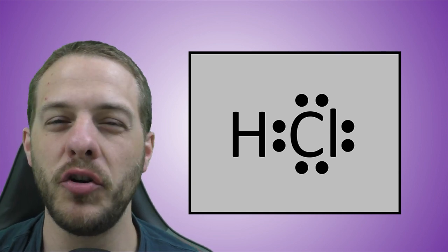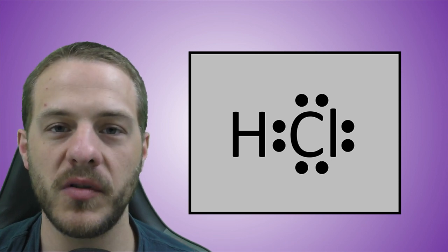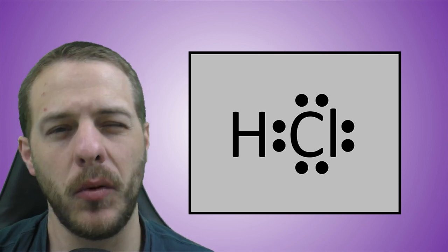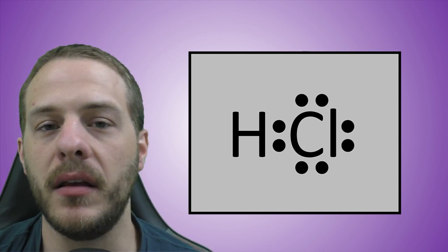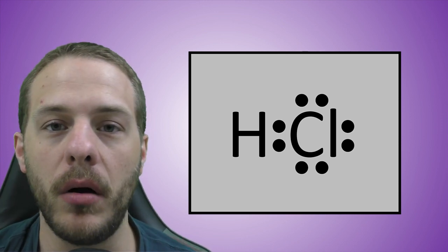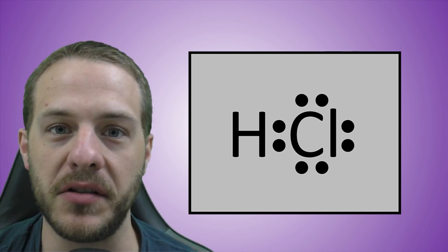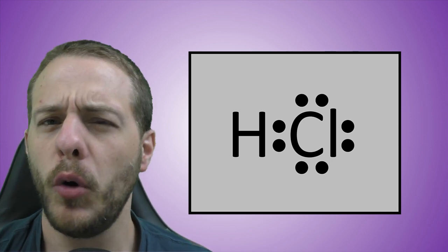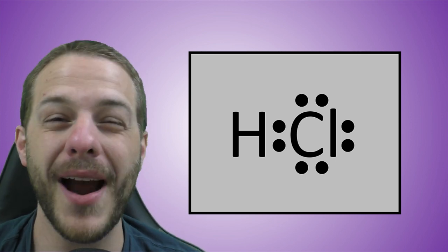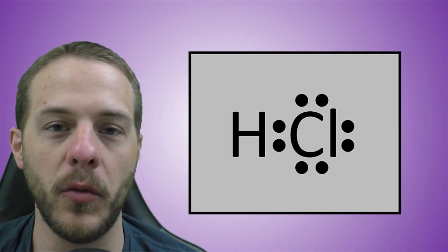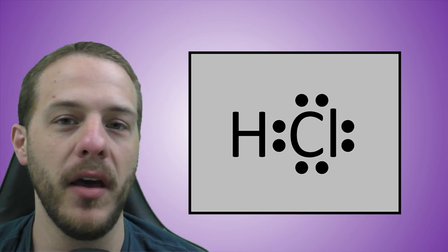What this structure doesn't tell you is the degree to which the electrons are shared between the two atoms — are they shared equally or unequally? This structure tends to imply that the electrons are shared equally; after all, the dots are the same size and the pair of dots is equidistant from the two chemical symbols. It turns out that the electrons in that single covalent bond are actually shared unequally between the two atoms, because one of the atoms is more electronegative than the other.